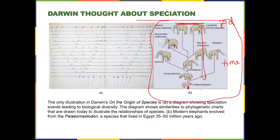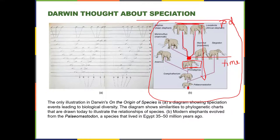On the evolutionary tree, as you go back in time, things that are now different species connect to a common ancestor — where the two lines meet. If you backtrack on the Asian elephant and the African elephant, there is a common ancestor that lived at some point in history. Then it split into two species. The paleomastodon, for example, would be an early point on this section of the tree, tying into the larger evolutionary tree of life. This concept of common ancestry is shown in Darwin's writings.